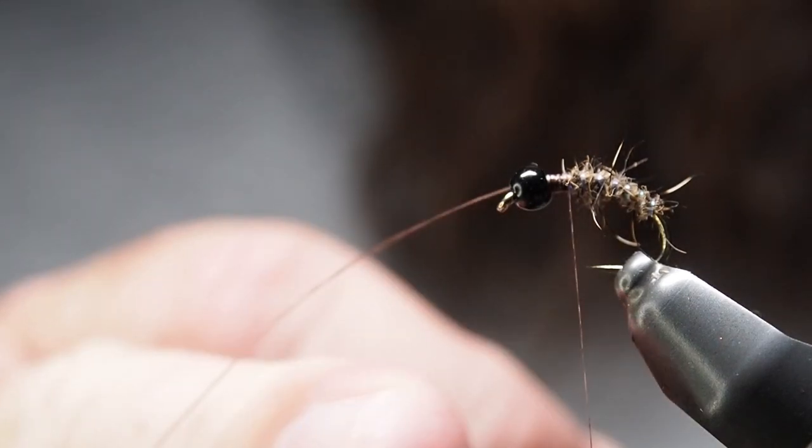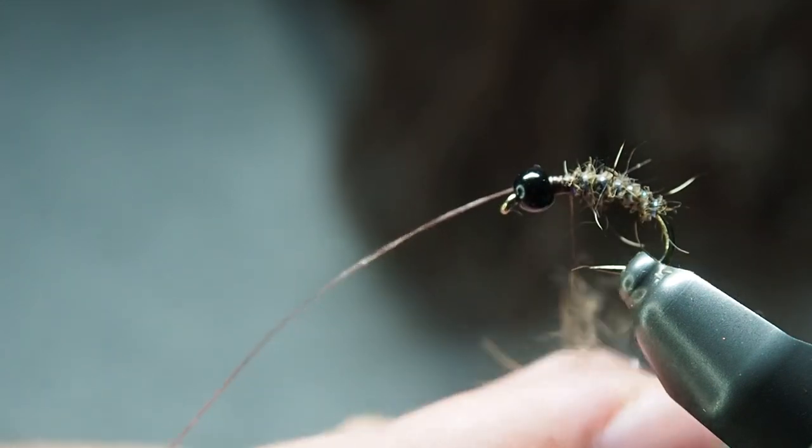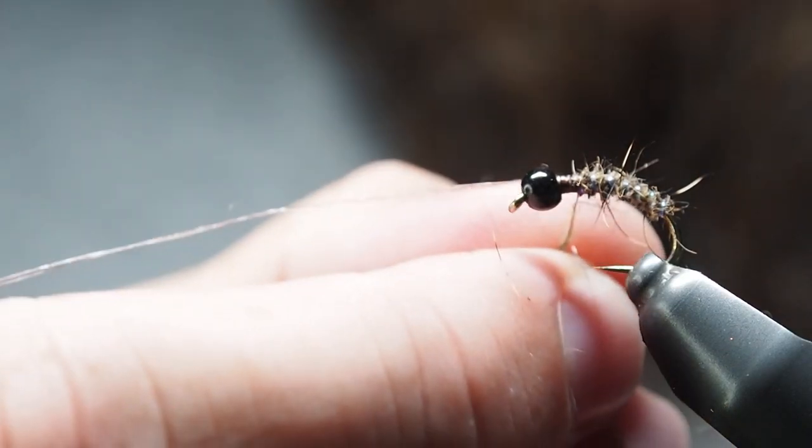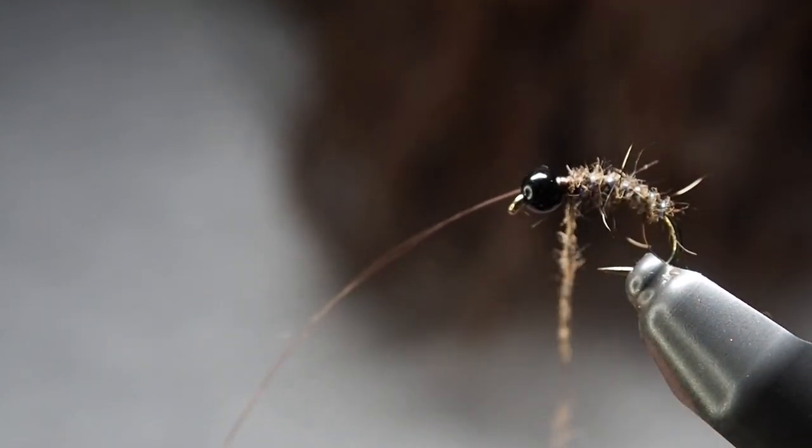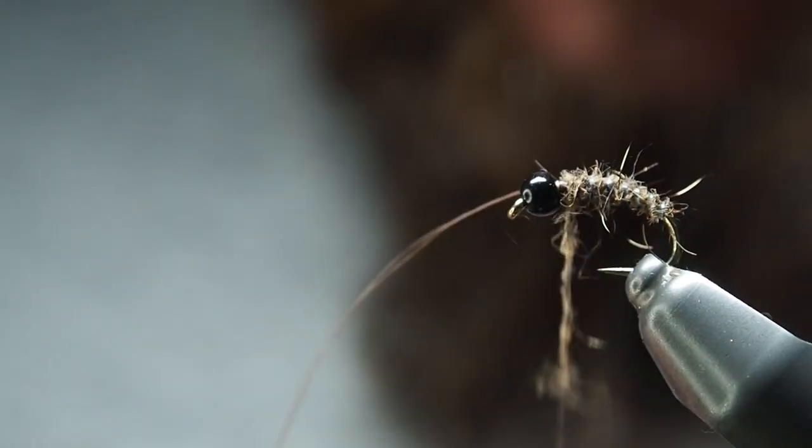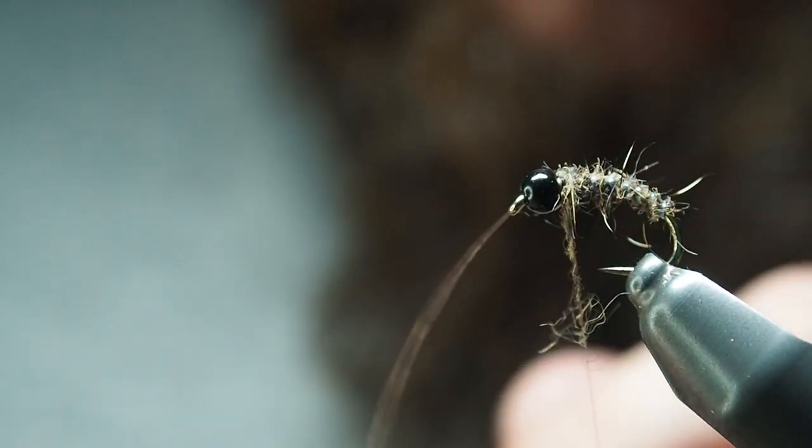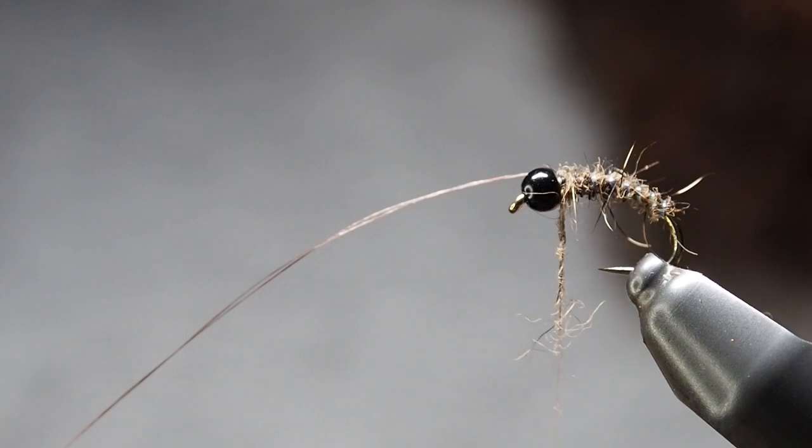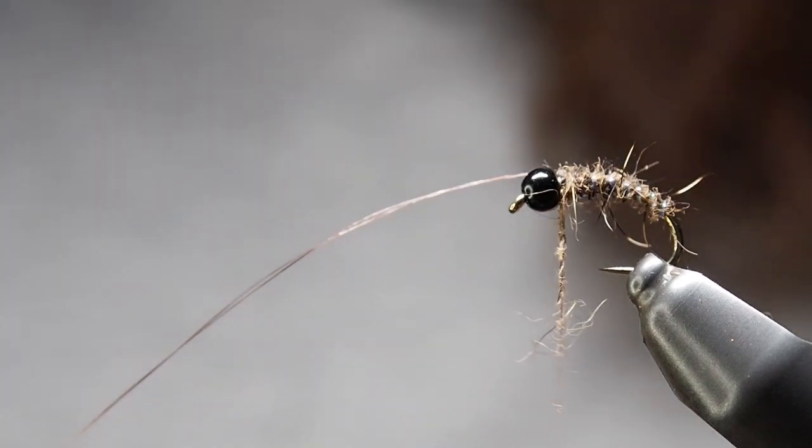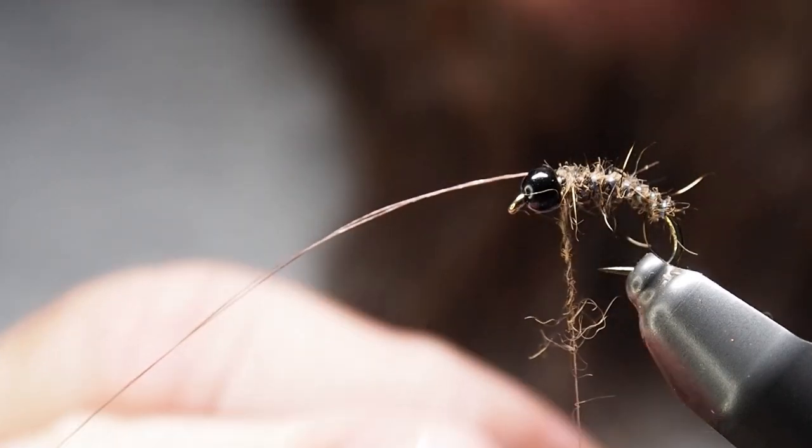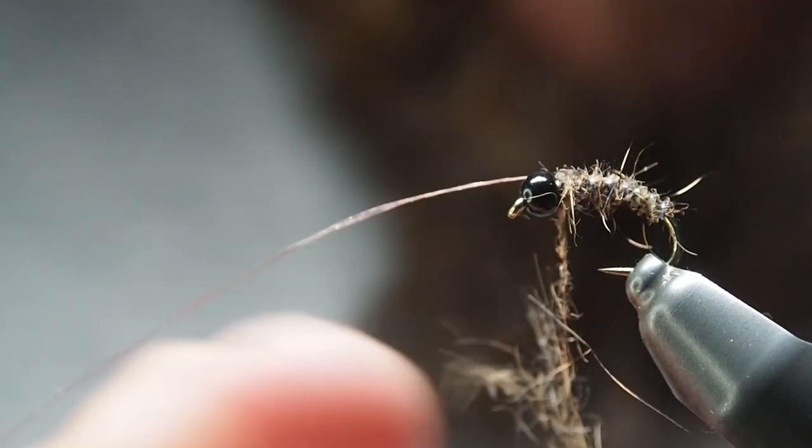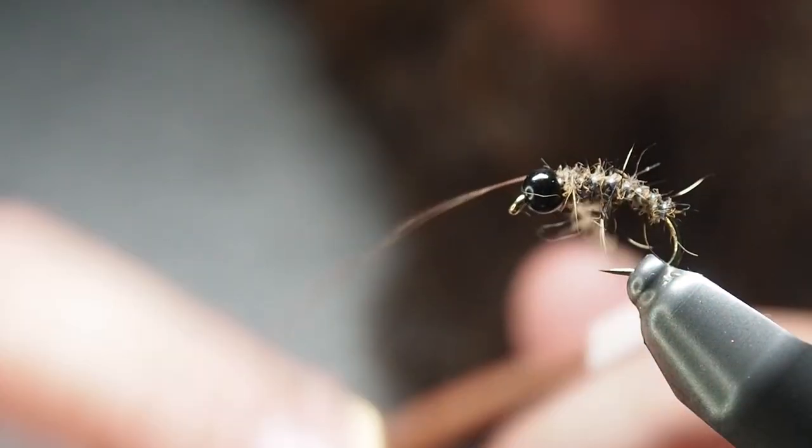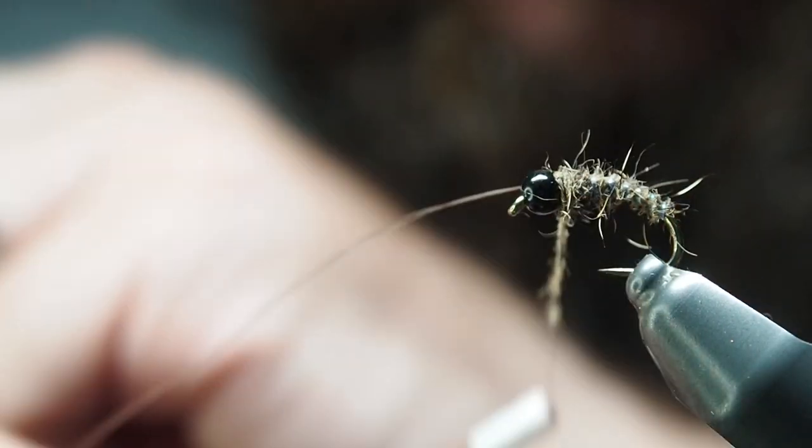From there we're just back into building up that dubbing ball. Just pull that down, nothing special here. Sometimes you'll get caught up in that little dubbing loop you might have made, but the little guard hairs are just going to be sticking out left, right, and center and give it a nice little bugginess. Build that up until you're in behind the bead.